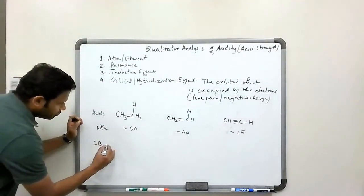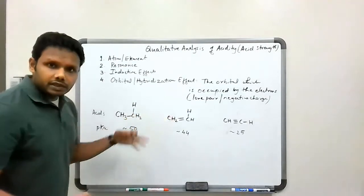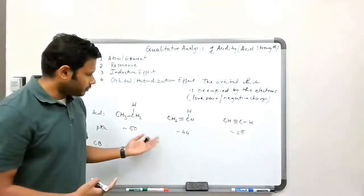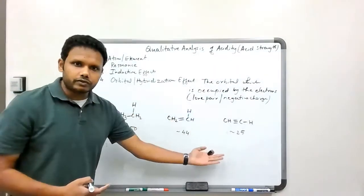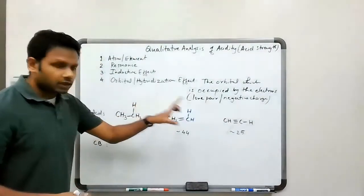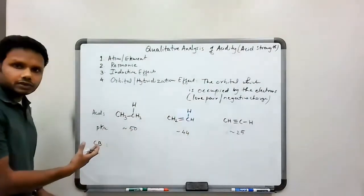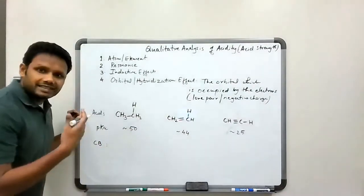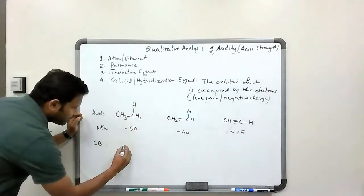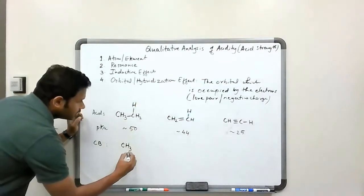Now, the conjugate base for each of these, because again we're talking about acidity, and we want to understand this order of acidity. The structure of the acid does not help us understand that, so we have to draw the conjugate base and then understand the stability of the conjugate base.